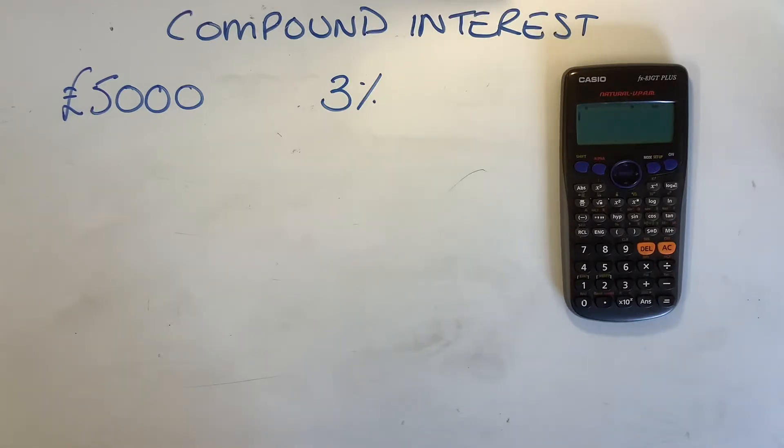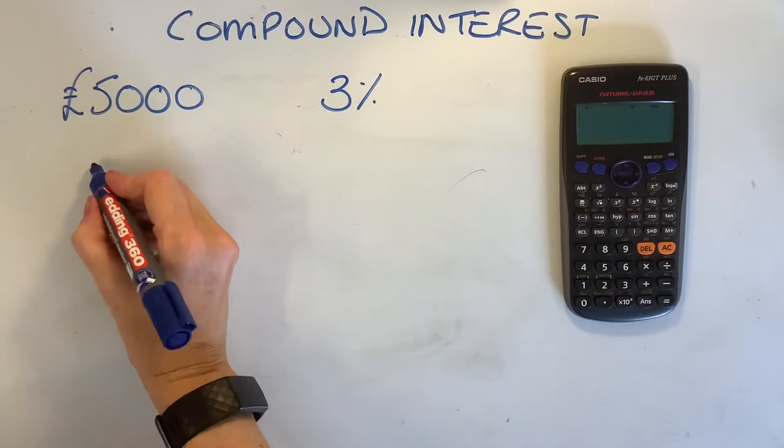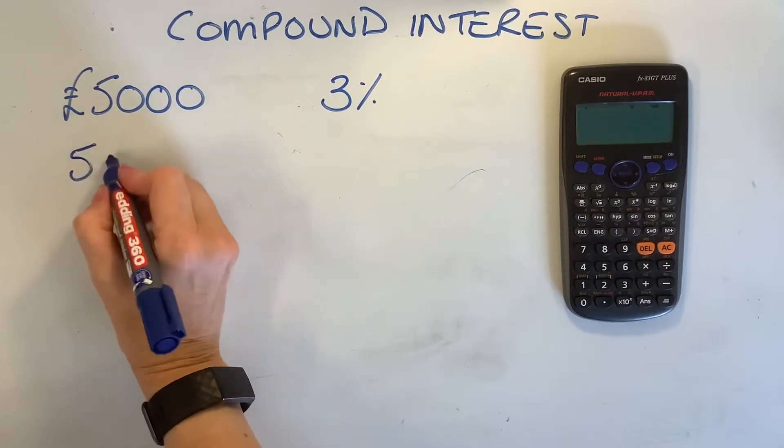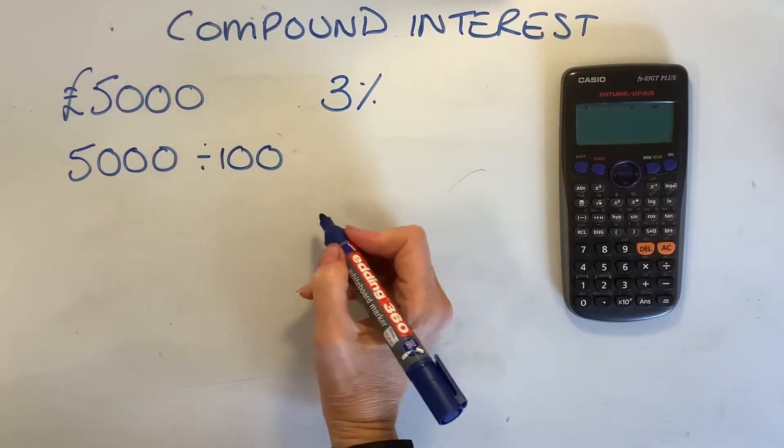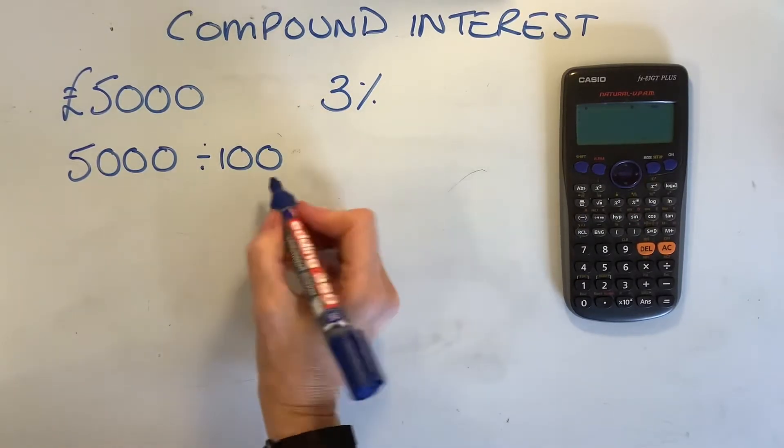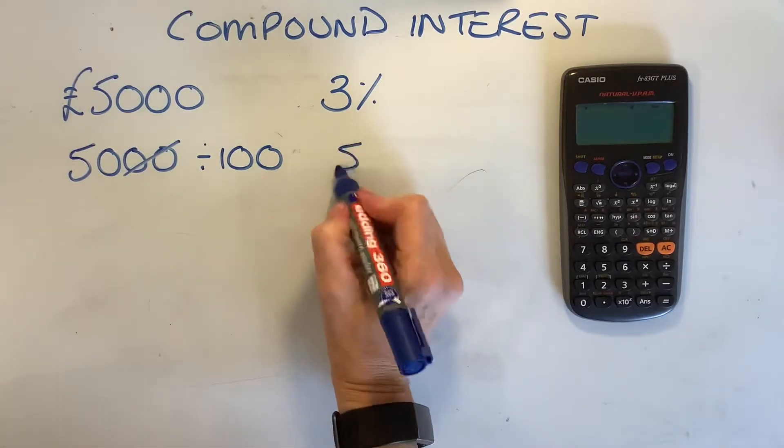The first is the simpler method. The second method is the more level two, the higher thinking. This is what you might be expected to do. To find 1%, we'll start with the nice easy method. We'll do £5,000 divided by 100. You can do it on a calculator, you can actually do it just in your head because all we're going to do basically is knock two zeros off and we end up with £50.